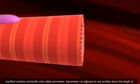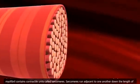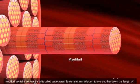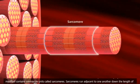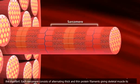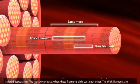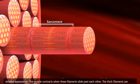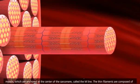Muscle fibers are composed of many myofibrils. A myofibril contains contractile units called sarcomeres. Sarcomeres run adjacent to one another down the length of the myofibril. Each sarcomere consists of alternating thick and thin protein filaments, giving skeletal muscle its striated appearance. The muscle contracts when these filaments slide past each other.